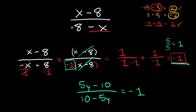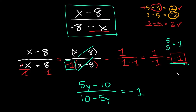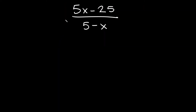Let's do a couple more examples. Here we have 5x minus 25 over 5 minus x. Whenever you're simplifying rational expressions, the first thing you always want to do is factor the top and the bottom as much as possible before canceling. On the first problem we didn't have anything to factor, but here we can factor the top — 5x minus 25.